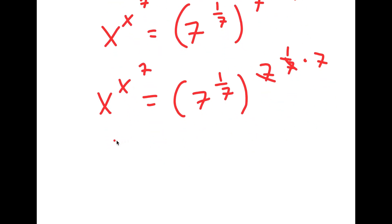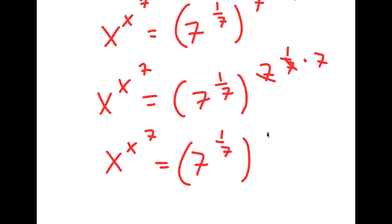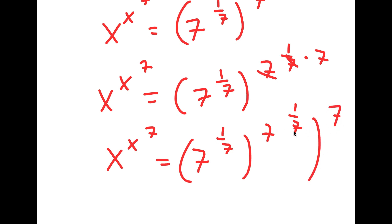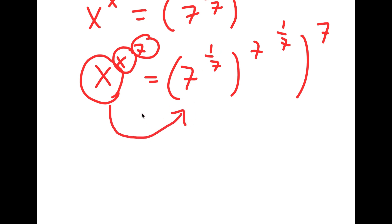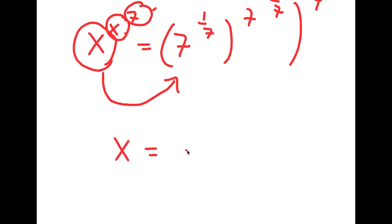So I'm left with x to the power of x to the power of 7, to the power of 1 over 7, is equal to 7 to the power of 7 to the power of 7 to the power of 7. Notice how this is in the form x to the power of x to the power of 7 — we can think of x as 7 to the power of 1 over 7, meaning x is simply equal to 7 to the power of 1 over 7.